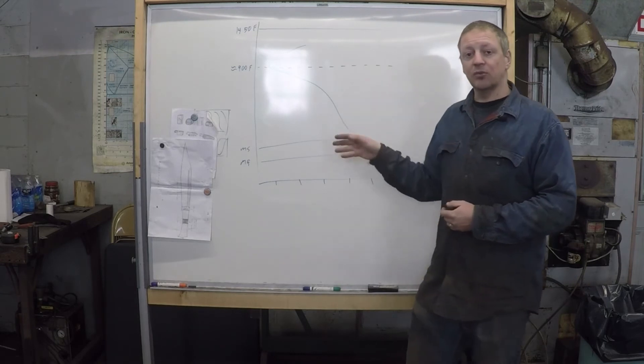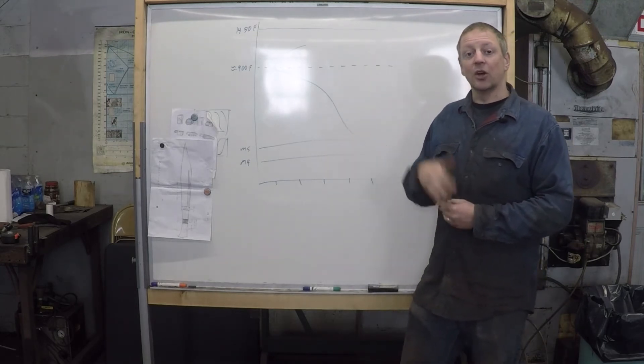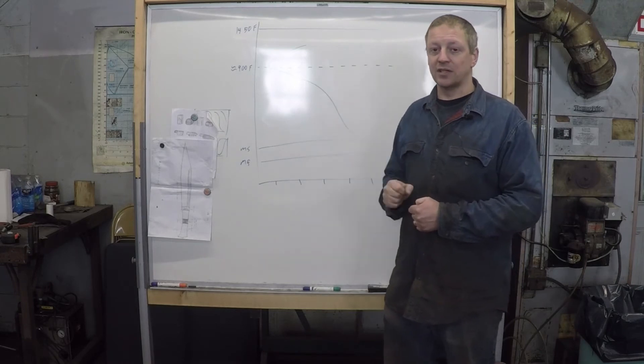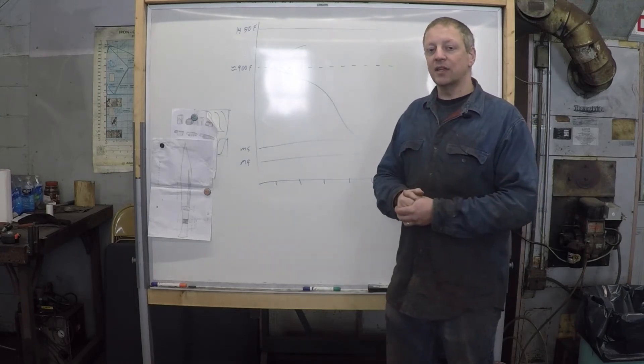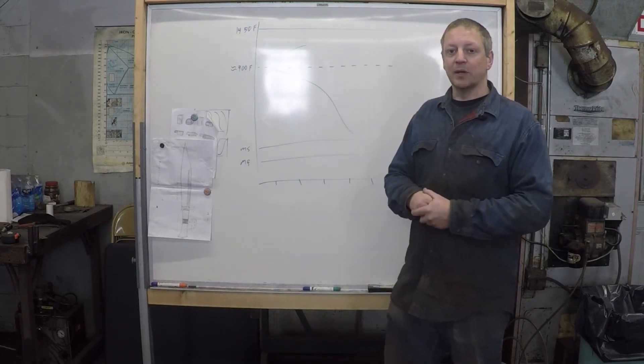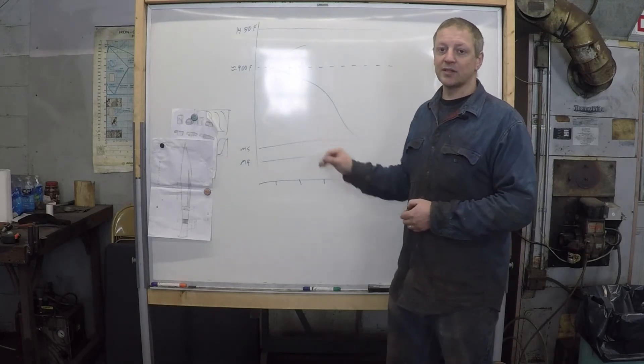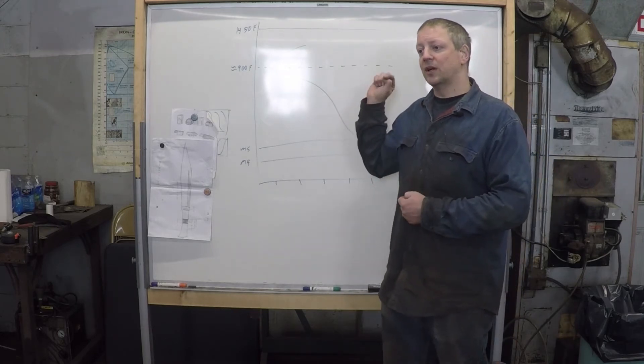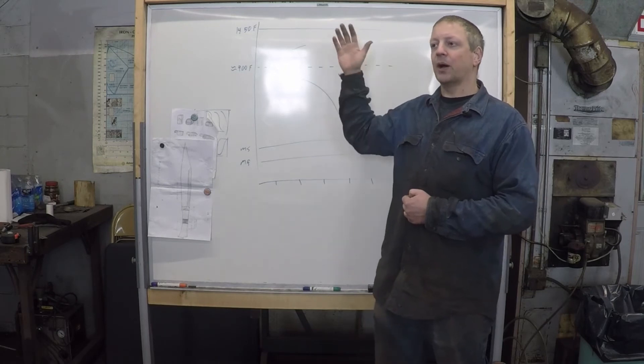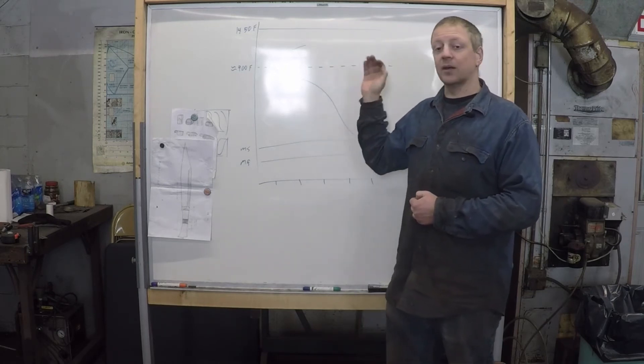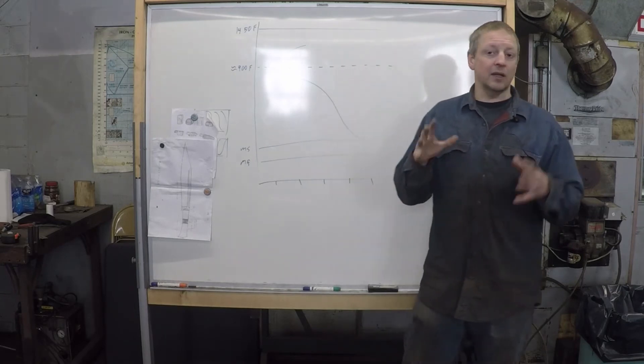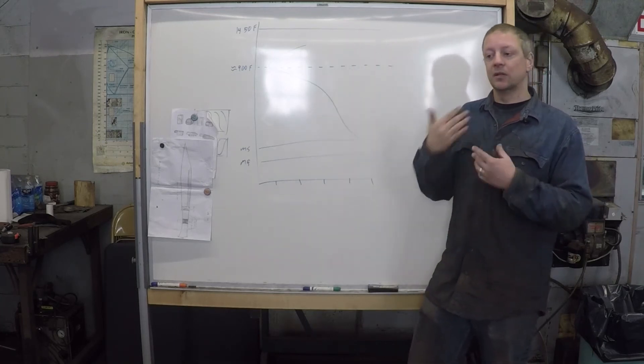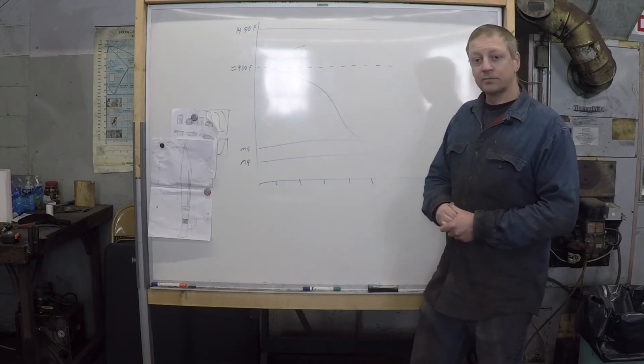So if you temper this, what happens? Some of that carbon is released out of the matrix, becomes very fine carbide precipitate throughout the steel in a very fine dispersion. And that releases tension. That's why I lose some of the hardness, but that also makes more space for that retained austenite to now transform as I'm cooling again. There is a diminishing return to the number of temper cycles. You don't want to just keep going forever with this. But it's worth doing some testing in different steels.